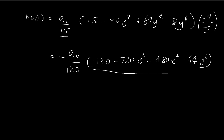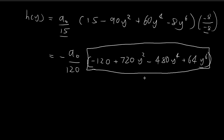This gives us negative A0 over 120 times (negative 120 plus 720y squared minus 480y to the power of 4 plus 64y to the power of 6). The leading term now has coefficient 64, as required. This entire polynomial is therefore the Hermite polynomial H6 of y.